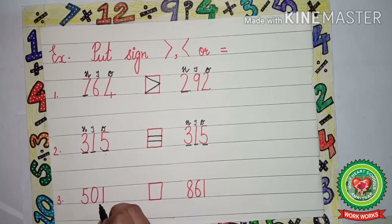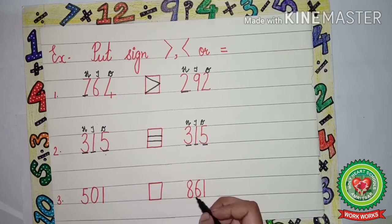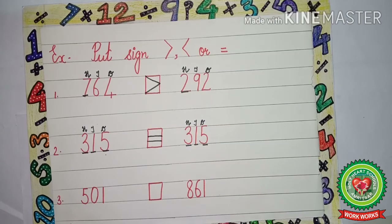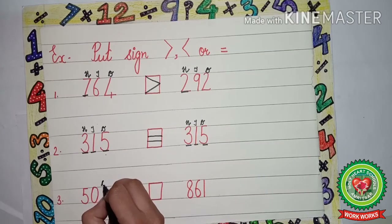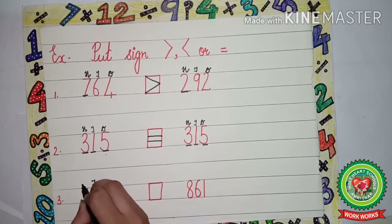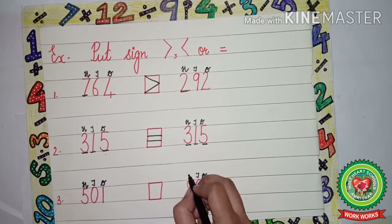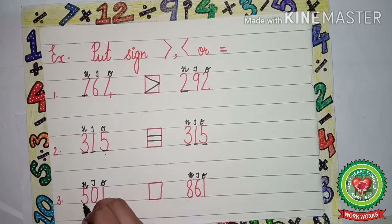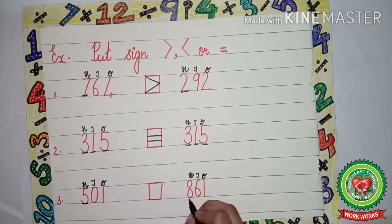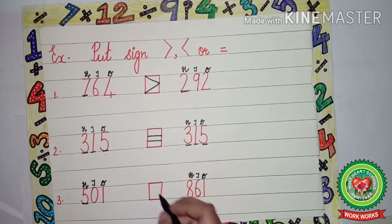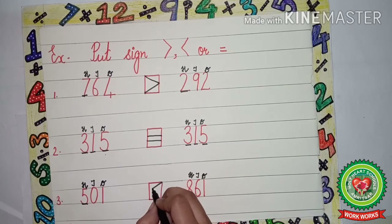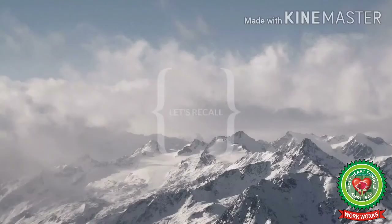Next is 501 and 861. Again, first we will write down the place value chart. We underline the first digit: 5 and 8. Which one is the greatest? 8. Means 861 is the greatest number, so we will put the greater than sign on this side.